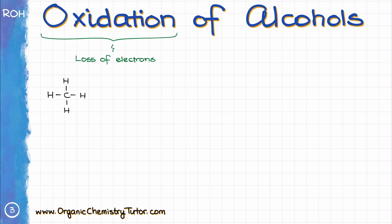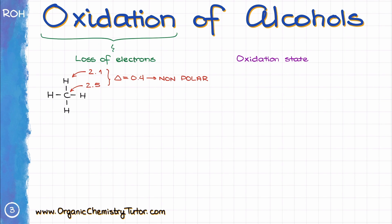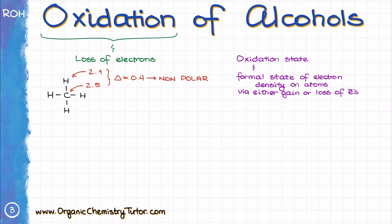Let's illustrate with an example. Say we have a methane molecule. The electronegativity of carbon is about 2.5, and the electronegativity of hydrogen is about 2.1. From general chemistry, we know that makes a non-polar bond since the difference in electronegativity is rather insignificant. This also means that neither carbon nor any of the hydrogens will have any excess or lack of electron density on them — electrons are shared more or less equally. However, when we talk about oxidation states, they don't care how big or small those differences are.